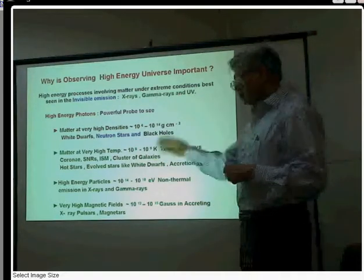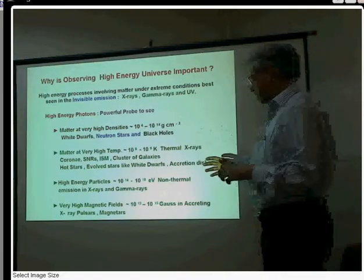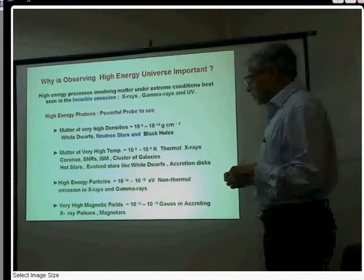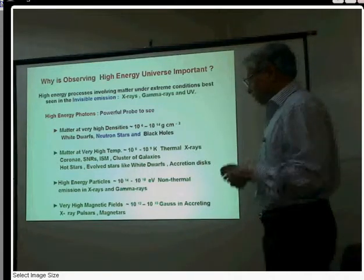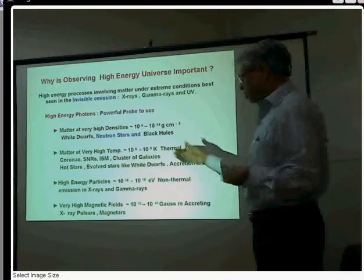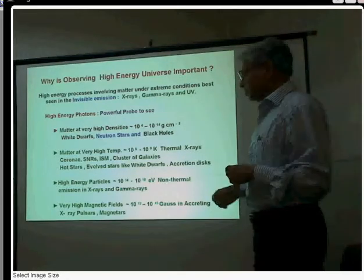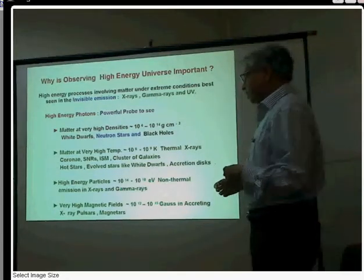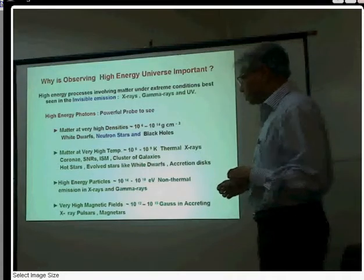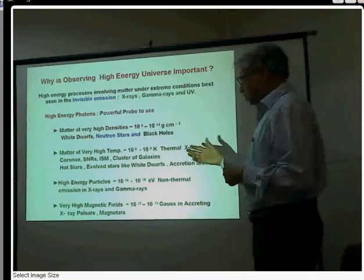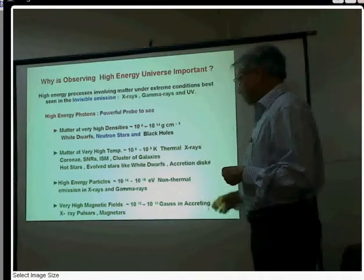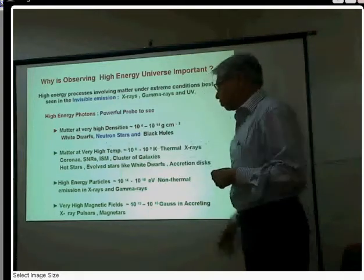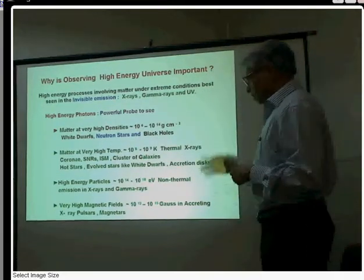Then there is the hot interstellar medium, where gas also radiates in the form of low-energy X-rays. Clusters of galaxies, where inter-cluster gas gets heated up due to the movement of the galaxies, also radiate in X-rays. Then there are hot stars — O stars and B stars — which have high temperatures, they also radiate in X-rays and have very high-temperature coronae.